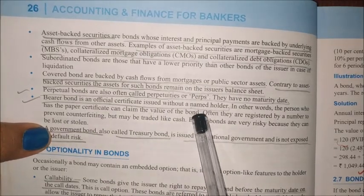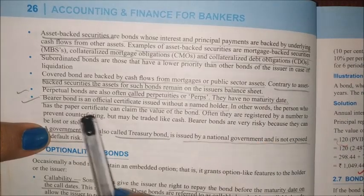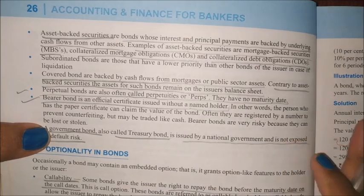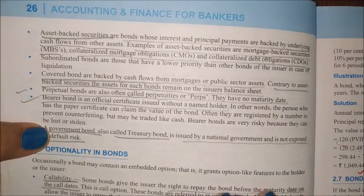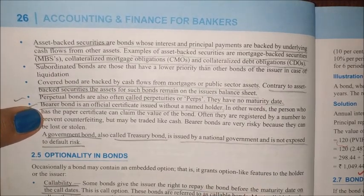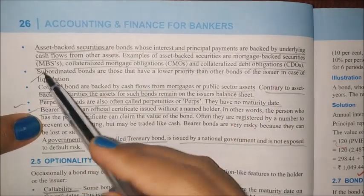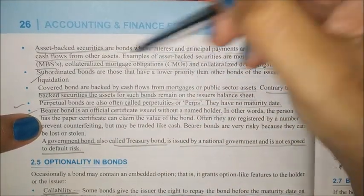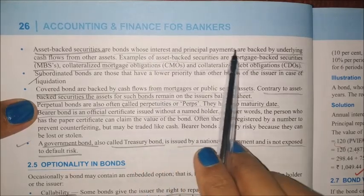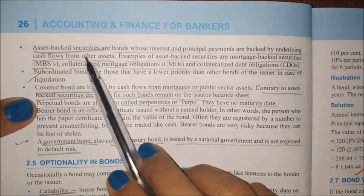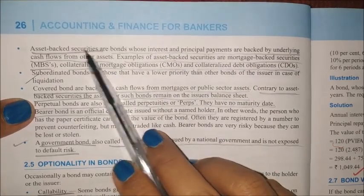Bearer bond is an official certificate issued without a named holder — anyone who holds that certificate is the owner of that bond. Subordinate bonds have a lower priority than other bonds in case of liquidation. Asset-backed securities are bonds whose interest and principal are backed by underlying cash flows from another asset, which acts as security for the bond.